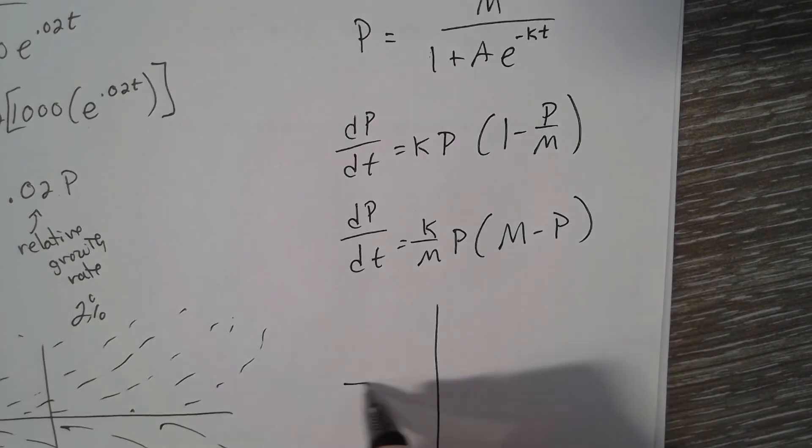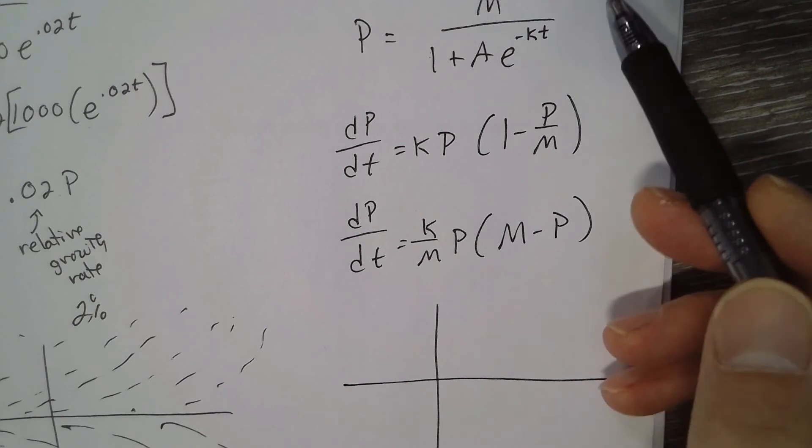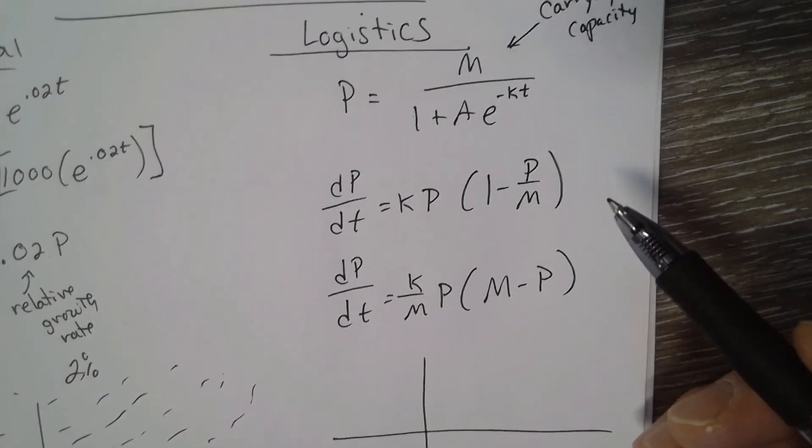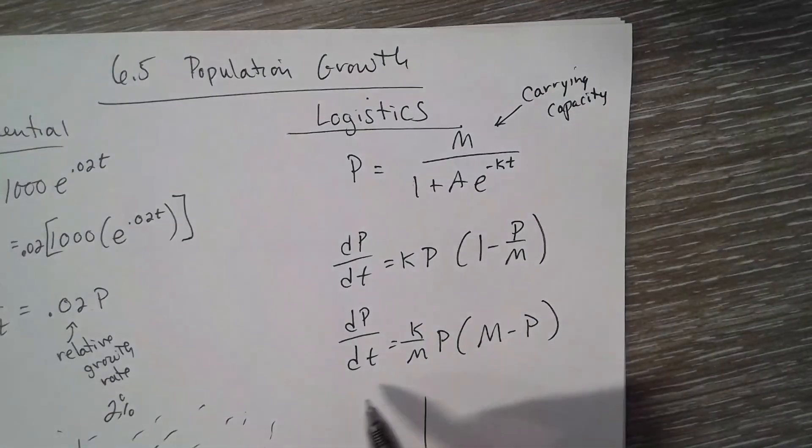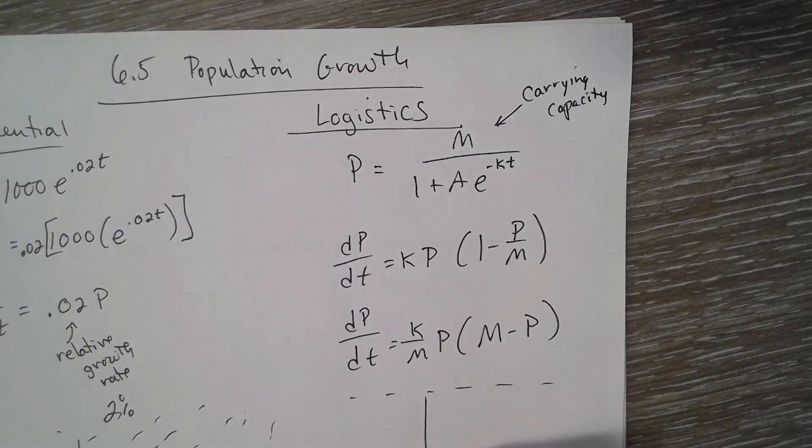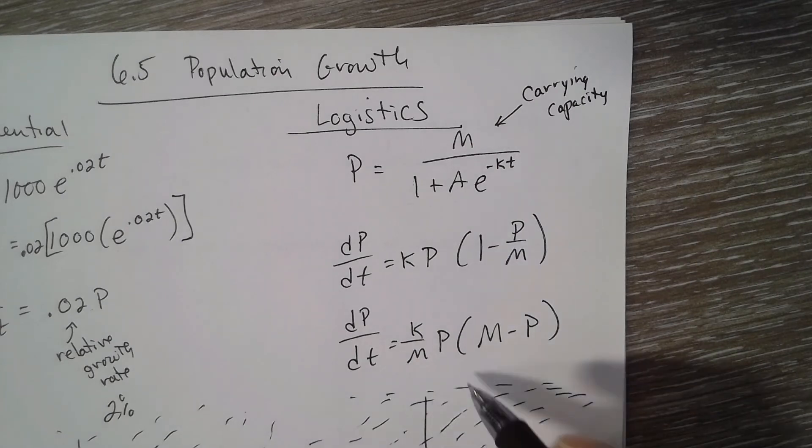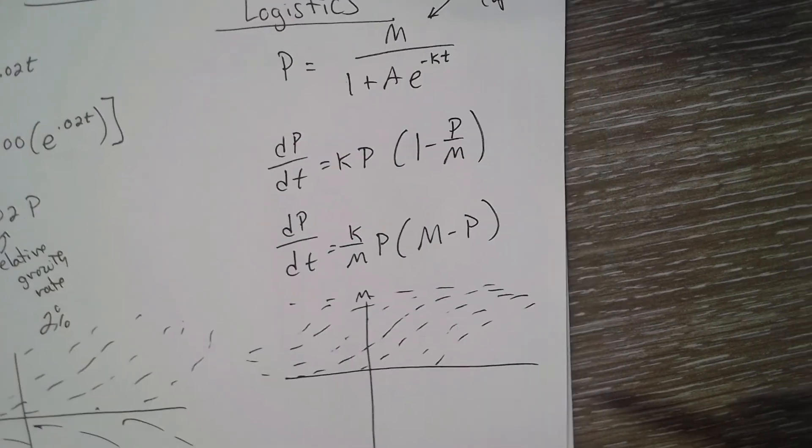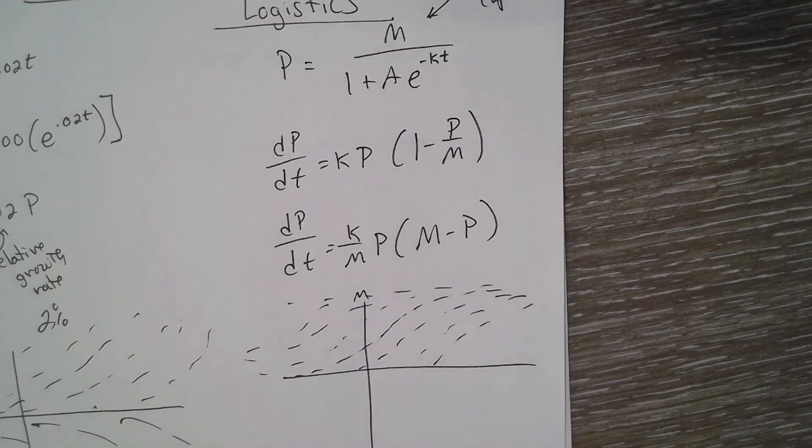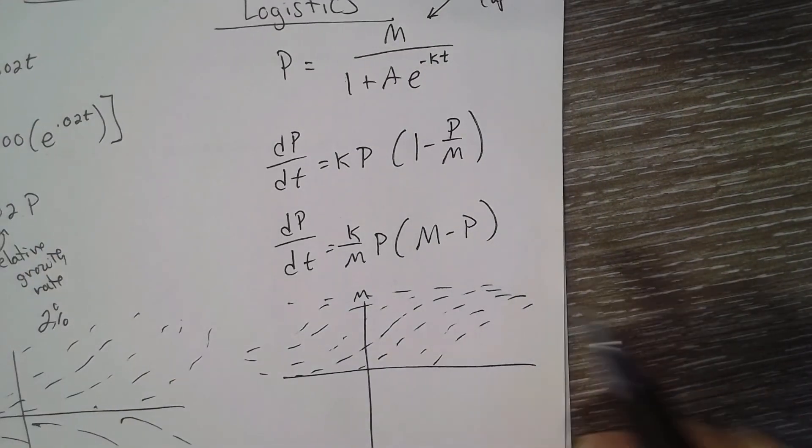The slope field for logistics growth has two horizontal asymptotes. So kind of think of it as right there and right there. So they kind of... you can see that this right here would be the M, that's the capacity. So let's say we've got...